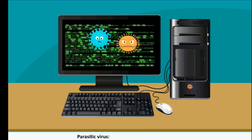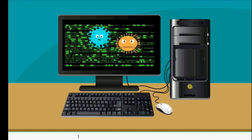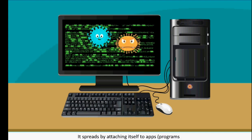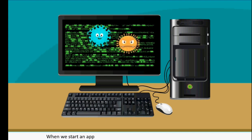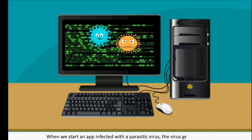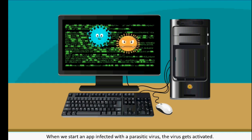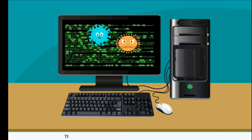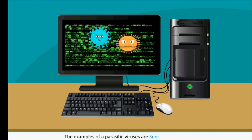Parasitic Virus: Also known as a Program Virus, it spreads by attaching itself to apps or any program. When we start an app infected with a parasitic virus, the virus gets activated. Examples of parasitic viruses are Sunday, Casket, etc.